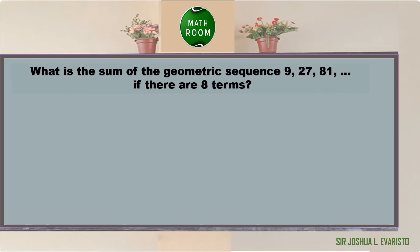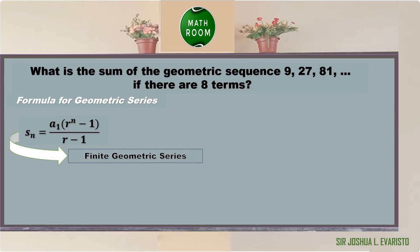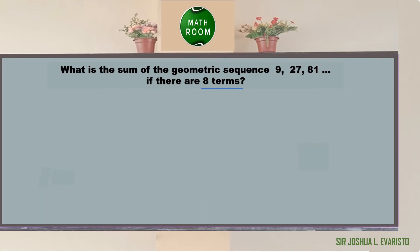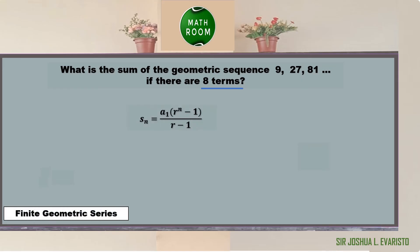Let's have an example. What is the sum of the geometric sequence 9, 27, 81 (and the pattern continues) if there are 8 terms? We can use the formula for finite geometric series: s of n equals a sub 1 times (r raised to n minus 1) all over (r minus 1). This is the formula for finite geometric series. The second formula, s equals a sub 1 over (1 minus r), is used for infinite geometric series, with the condition that the absolute value of r is less than 1.